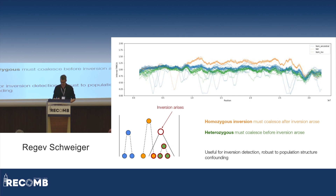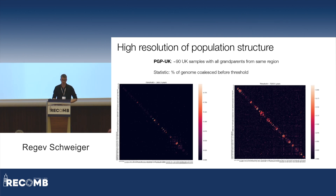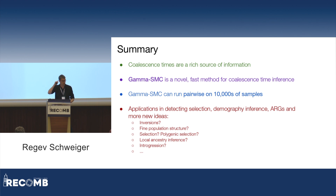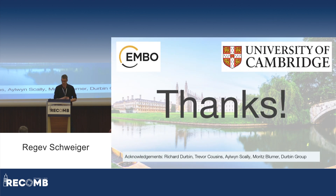To summarize: coalescence times are a very rich source of information for many population genetics analyses. Gamma SMC is our new method — just out — that's very fast for inferring coalescence times. Because it's so fast, it can run pairwise on tens of thousands of samples. We're now entering a phase of exploring applications: selection, demography inference, inversions, population structure, polygenic selection, local ancestry inference, and more. I'm happy to hear any suggestions. I'd like to thank my funders, the University, and the Durbin Group — Richard, Trevor, Elwin, and Moritz — and you for listening.